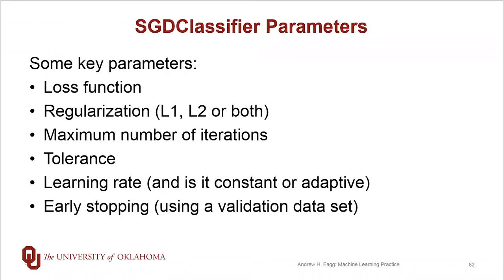We didn't really talk about the set of parameters — really meaning hyperparameters — that one can set for the SGD classifier. I encourage you to look at the formal Scikit-Learn documentation for the SGD classifier, as it lists all of the parameters and gives a fairly clear description of what each one does. First off, you can make a choice of what your cost function or loss function is. We were using the logistic regression type approach, but there are a variety of other things you can choose.